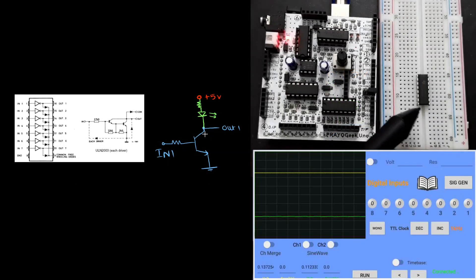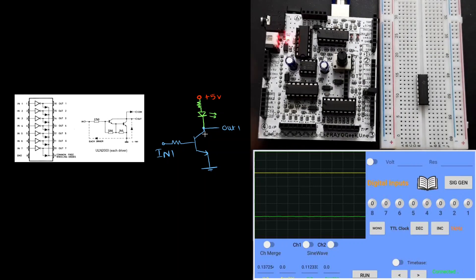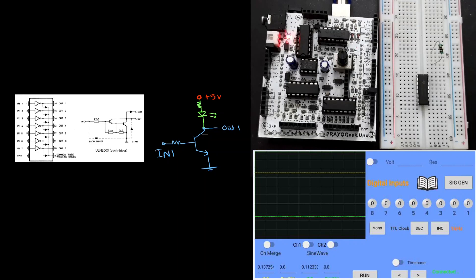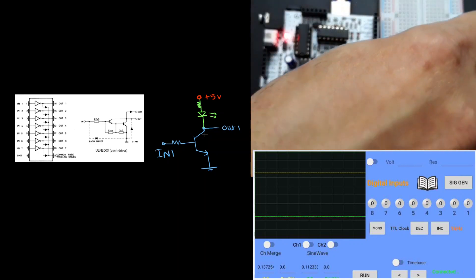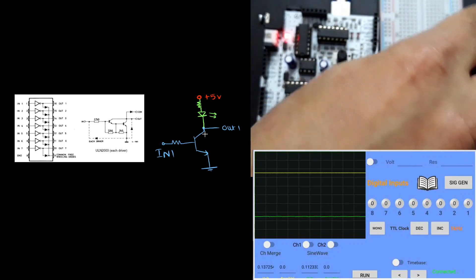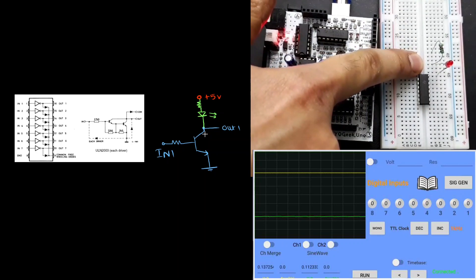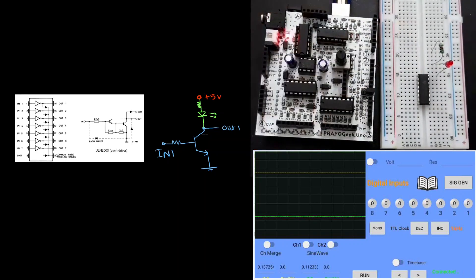I have placed the ULN2003 IC on top of the breadboard. Now let me place the resistor and the LED. Let me place the LED such a way that the cathode of the LED is at pin number 16 and the anode of the LED is at the same row as the resistor. I'm making the connections very similar to the circuit diagram. You can see it here.